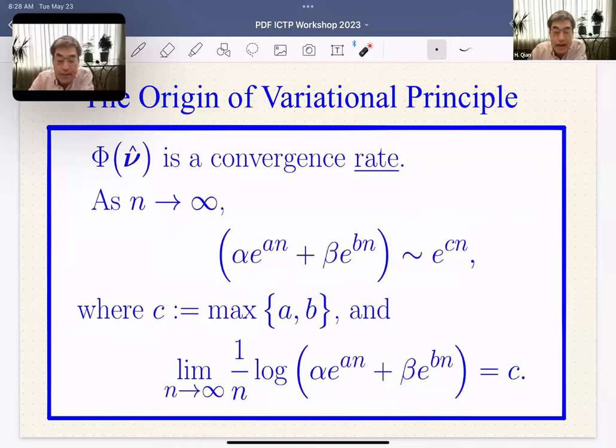With this definition of rate function, we know the mathematical result that two terms with exponential rates A and B give an asymptotic limit dominated by max(A,B). I want to say the fundamental origin of entropy maximization is not some statistical argument—it's fundamentally because of the very definition of this rate function, which we now identify as entropy.